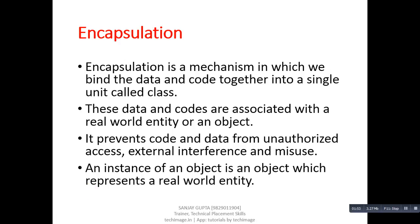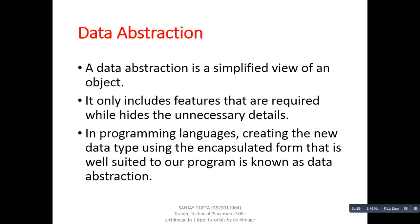Data abstraction is the second feature of C++. A data abstraction is a simplified view of an object — it only includes features that are required while hiding the unnecessary details. In a programming language, creating a new data type using the encapsulated form that is well suited to a program is known as data abstraction.